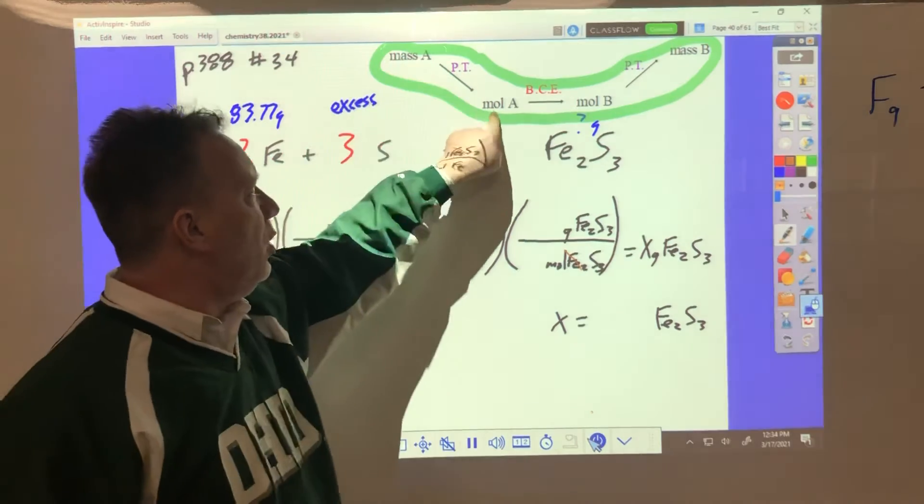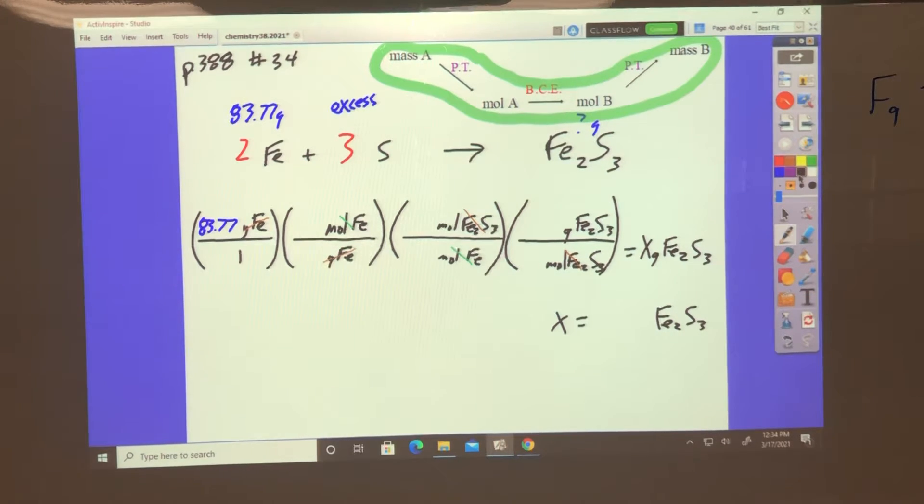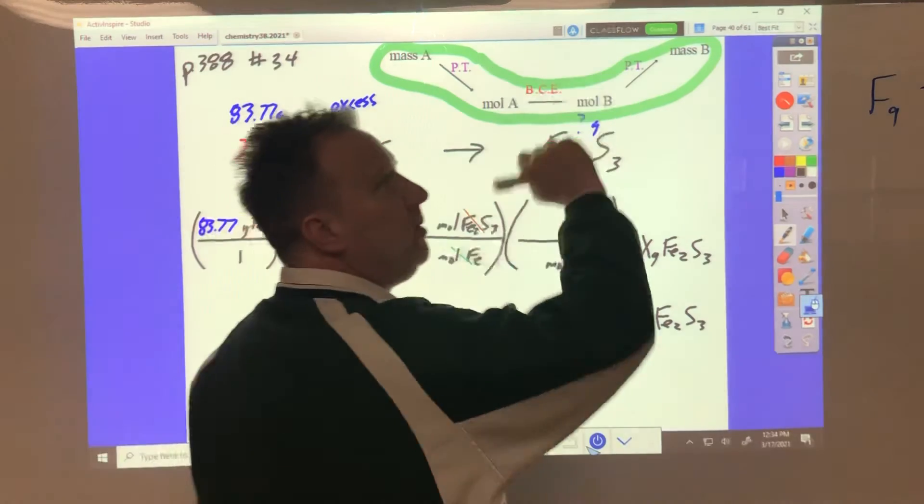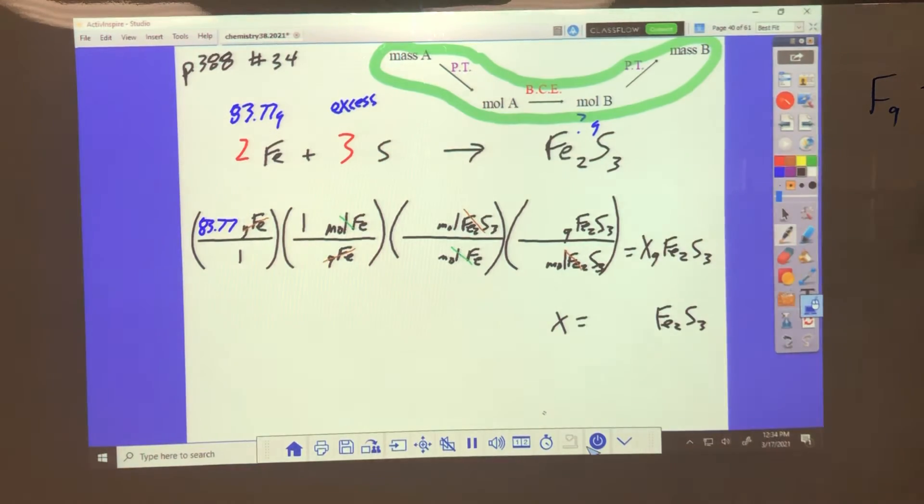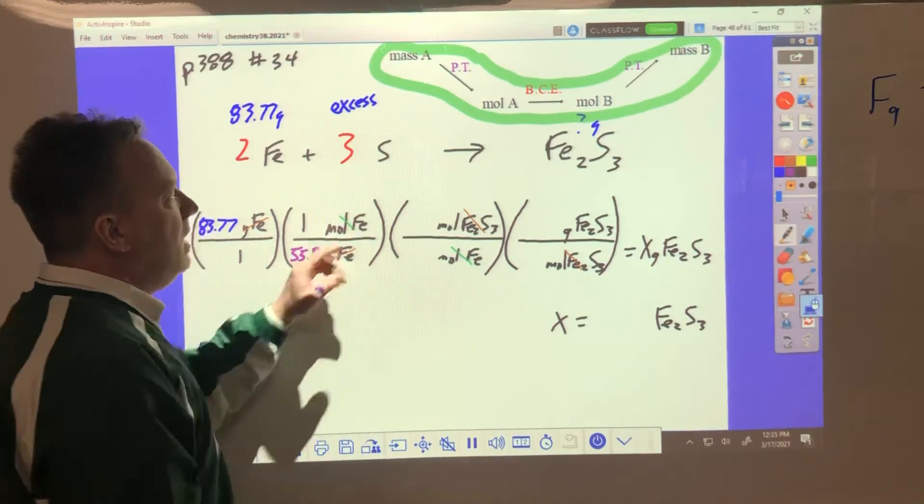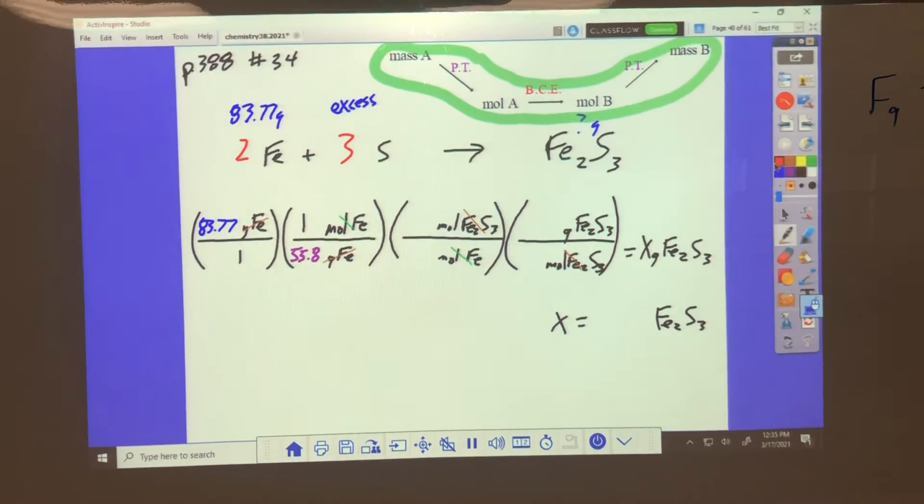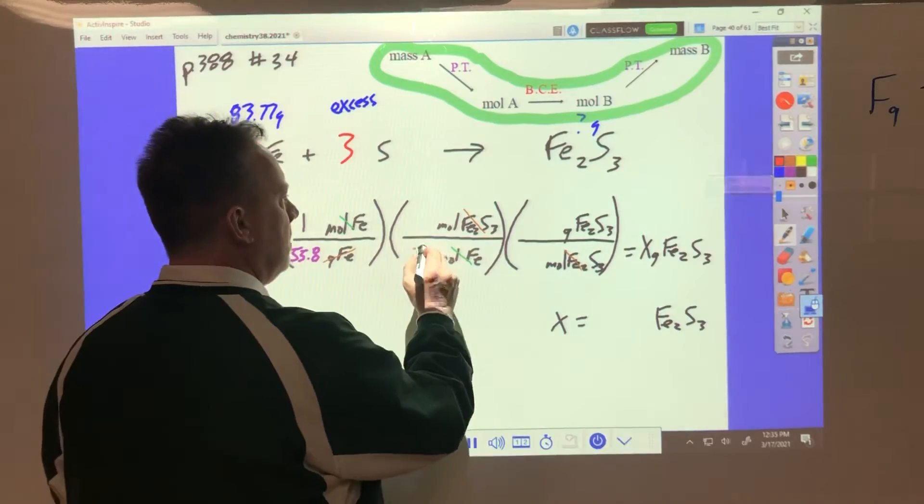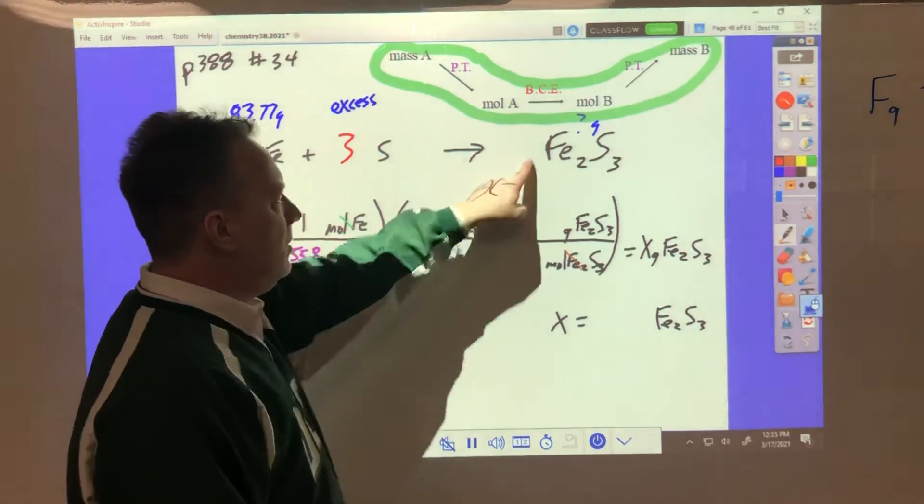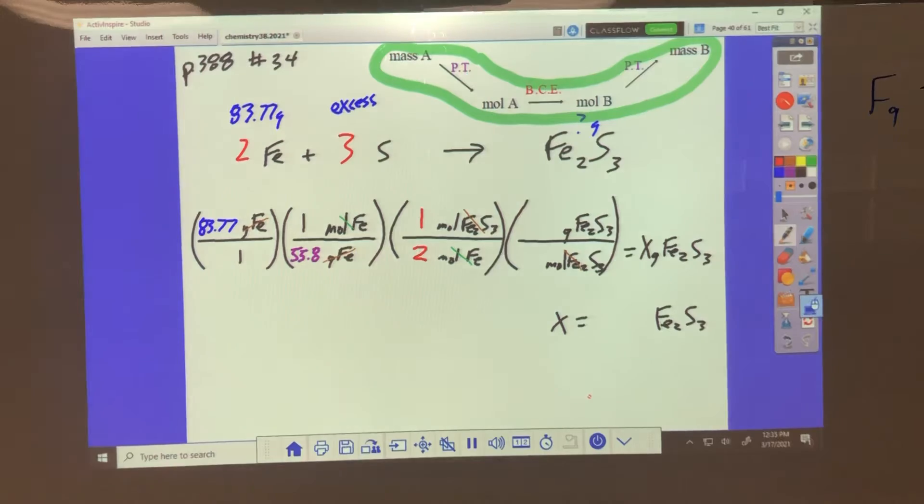Moles Fe cancels here, moles Fe2S3 cancels last. Now where do you get the moles from? The periodic table. In the periodic table, one mole of iron is 55.8 grams. I'll do that one in purple since it comes from the periodic table. 55.8. Then the next thing comes from the balanced chemical equation, so I'll do those in red. Two moles of iron gives us one mole of Fe2S3.